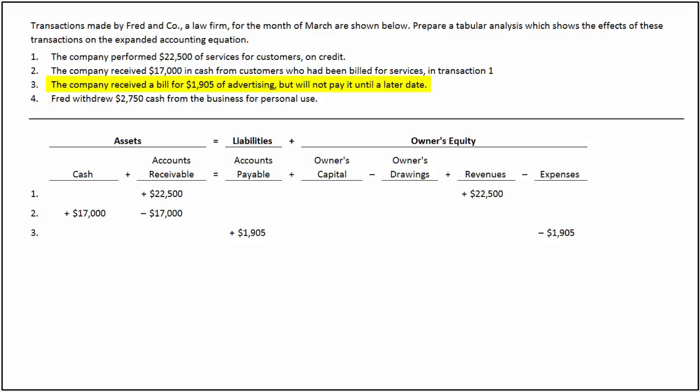Remember that a negative amount under the expense column does not mean a decrease in expense. This means any increase in expenses will decrease the owner's equity. An increase in liability and a decrease in owner's equity by the same amount results in a balanced accounting equation.